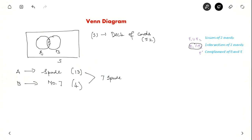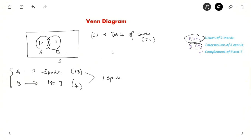What is A union B? The union of two events is when either you pick up a spade or you pick up number 7. So A union B will be 13 plus 4 minus 1. If you see, A alone is 13 minus 1 = 12, B alone is 4 minus 1 = 3, and the intersection part is 1. So either A or B — that is A union B — is 16, and A intersection B is 1.